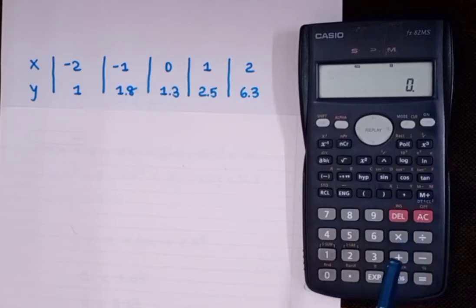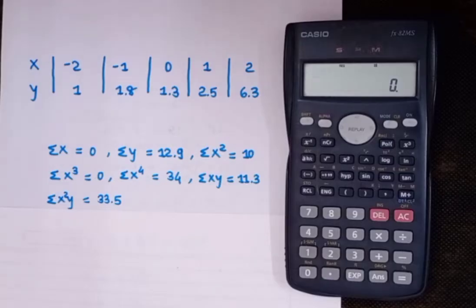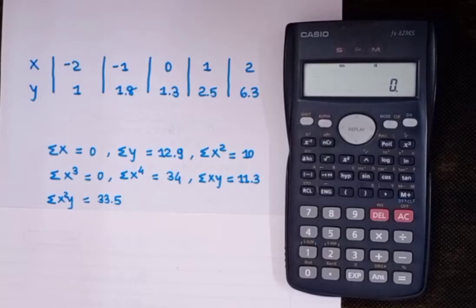Now press AC. In this video I'll show you how to find Sigma X, Sigma Y, Sigma X², Sigma X³, Sigma X⁴, Sigma XY, and Sigma X²Y using the calculator, and also the final required equation of the parabola: y = a + bx + cx².